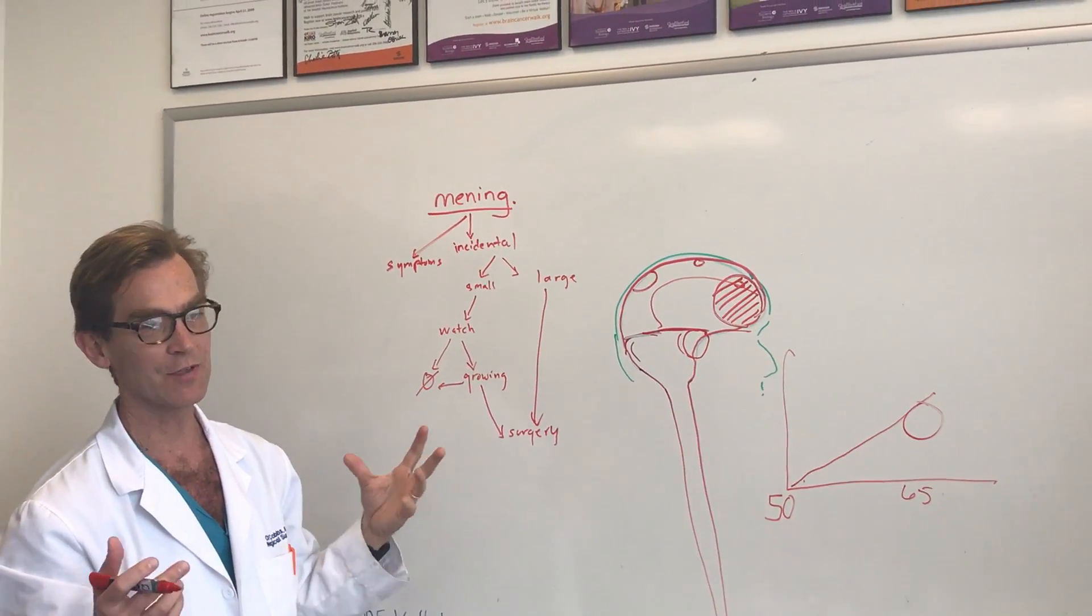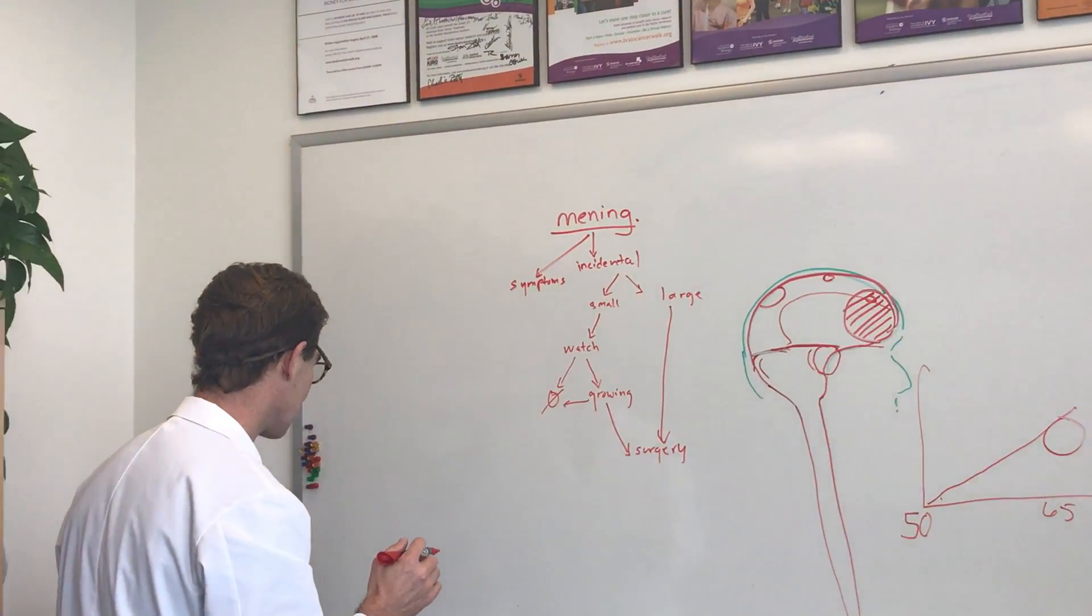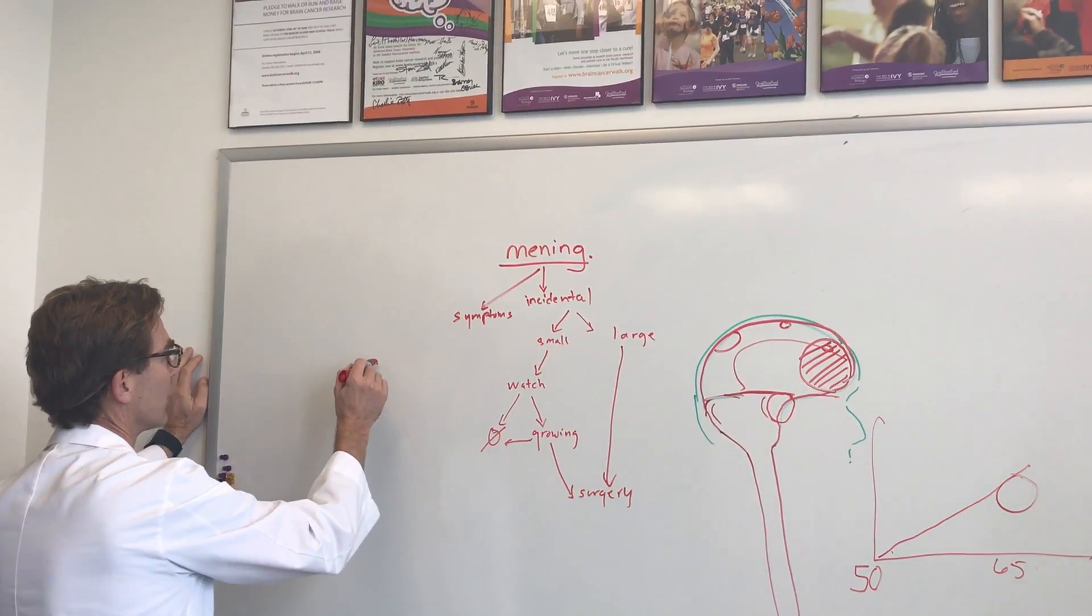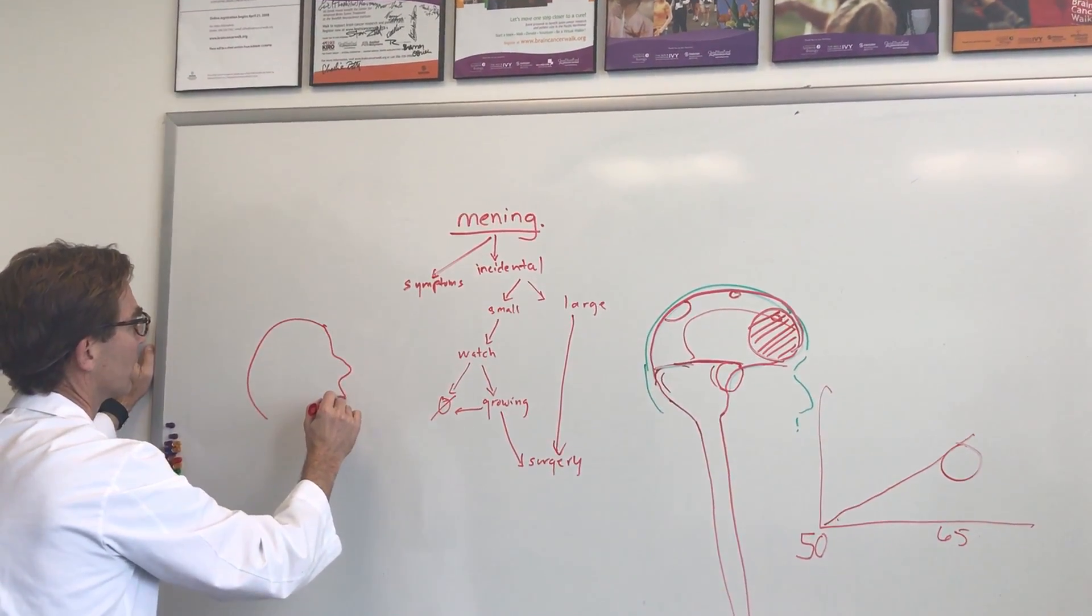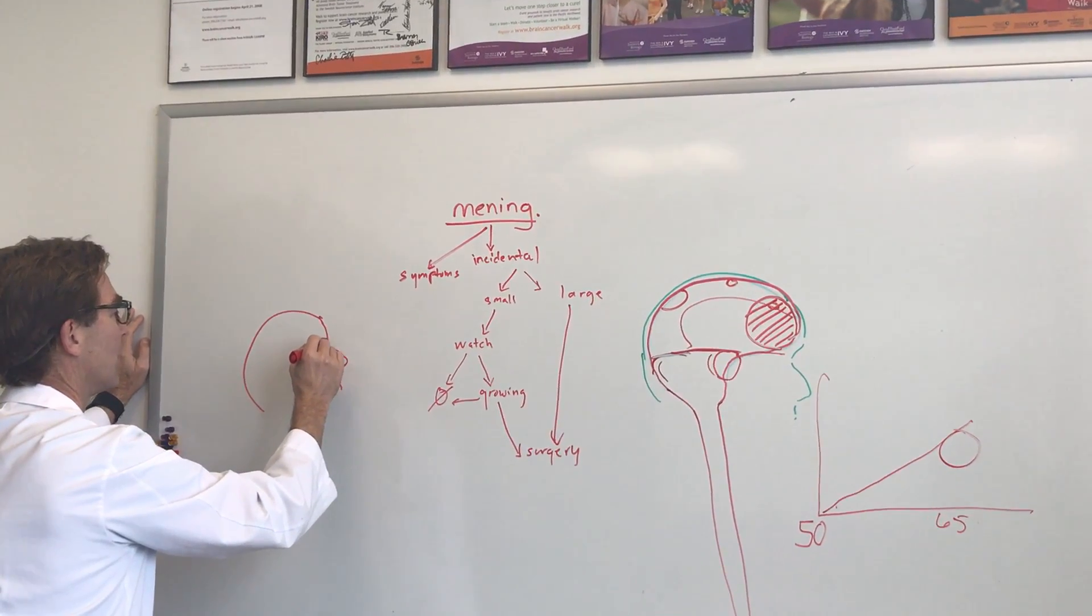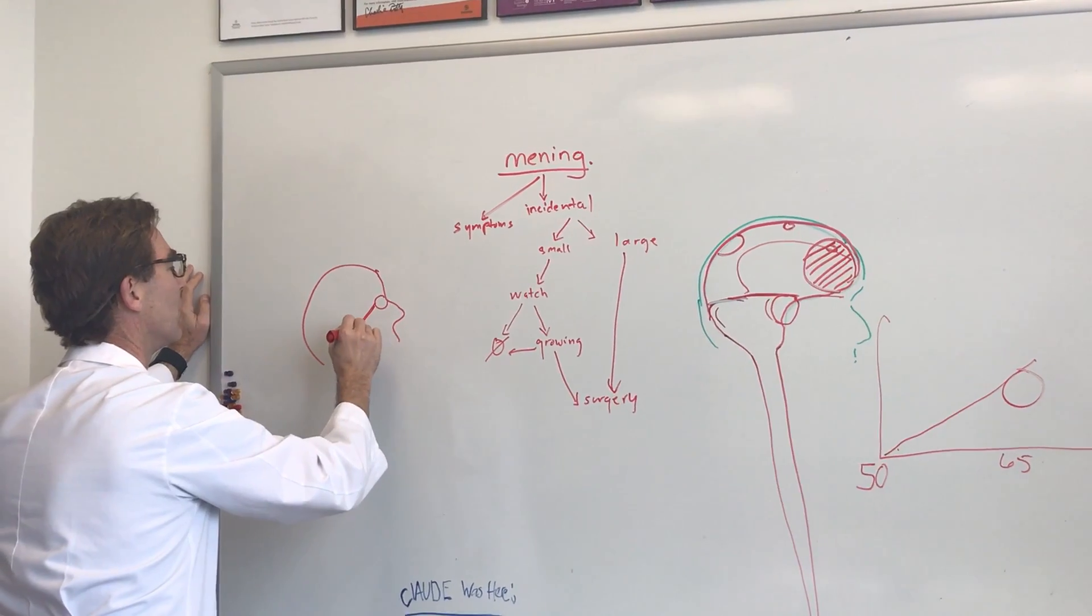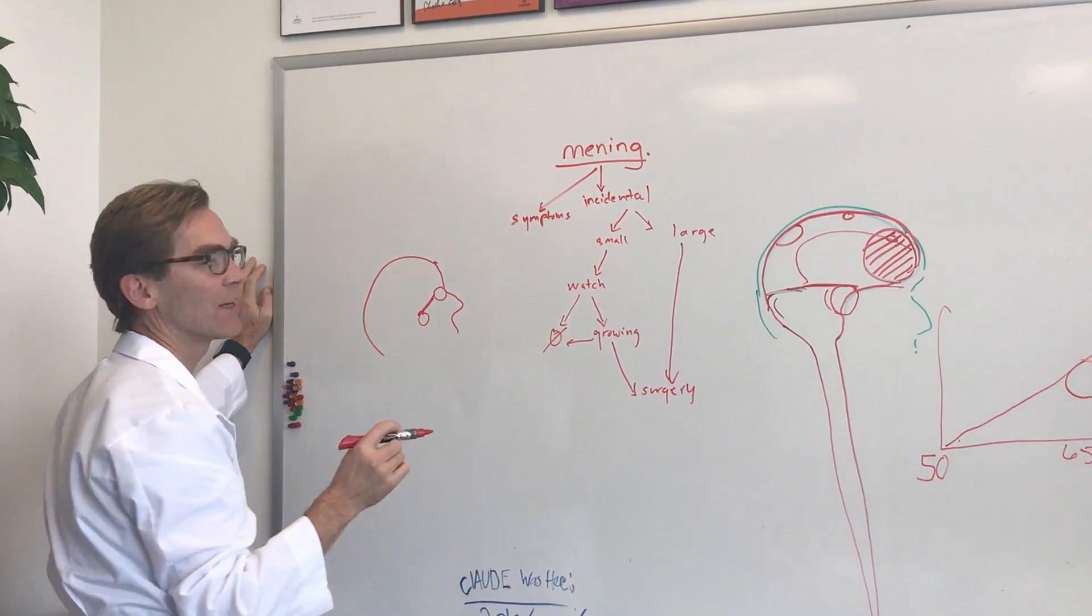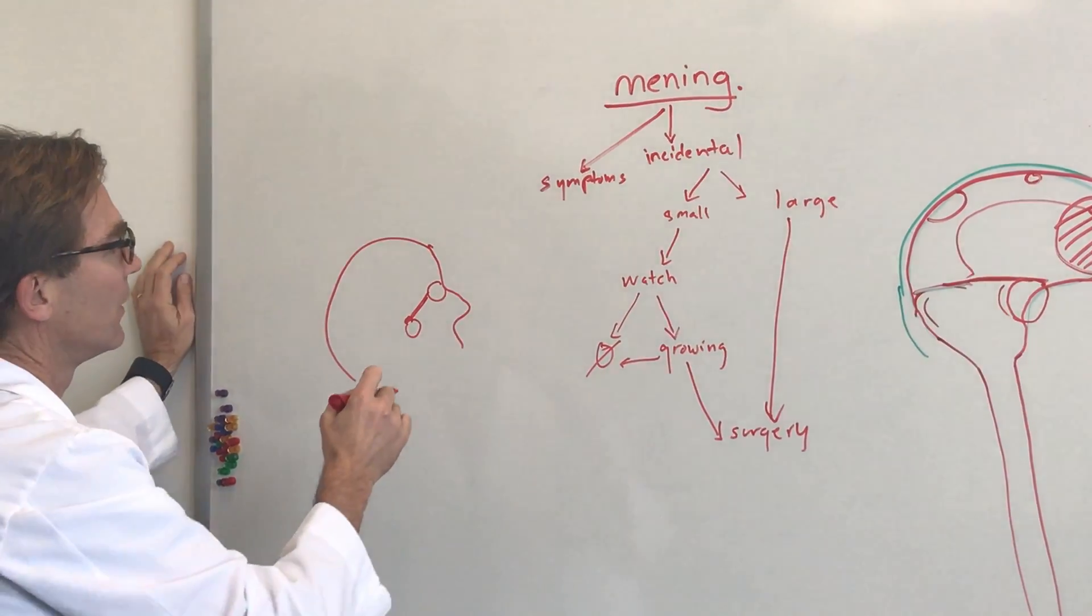Another possible option for small meningiomas or large meningiomas depending on where they are is radiosurgery. So radiosurgery sounds like something to do with surgery, it has nothing to do with surgery. Radiosurgery essentially is just delivery of radiation. Let's say this is your head. Often you'll see meningiomas they grow right behind the area of the eyes.